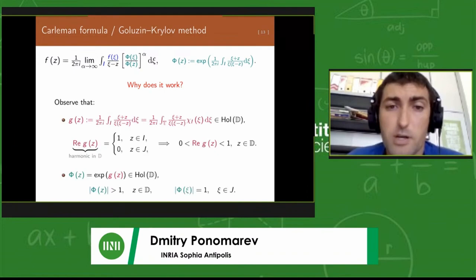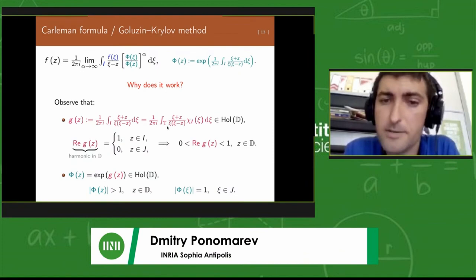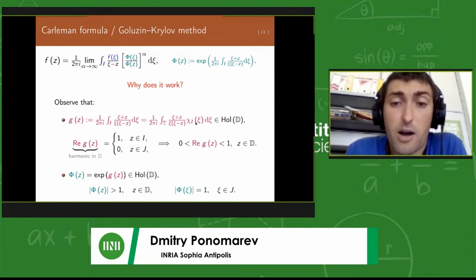It may look scary if you're not familiar with this, and I'm sure there are people who haven't seen this before. But actually, it can be explained in a few lines. So why does it work? In order to understand that, let's consider this function that appears in the exponential of this phi function.